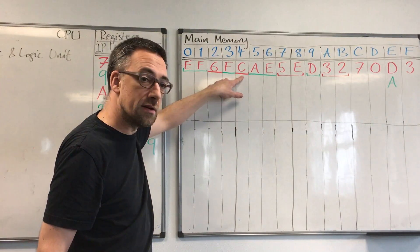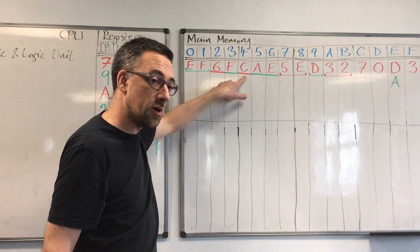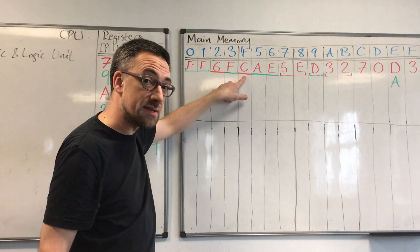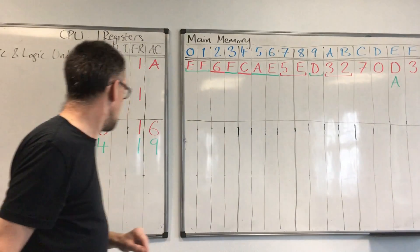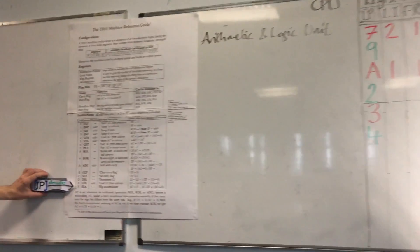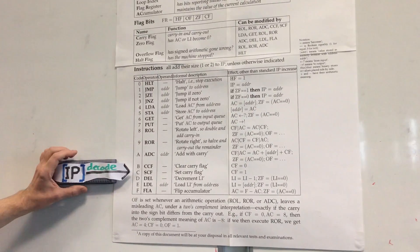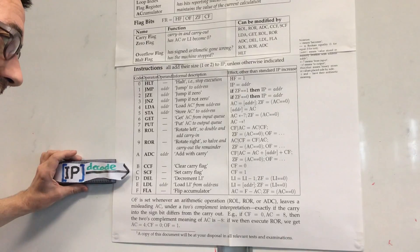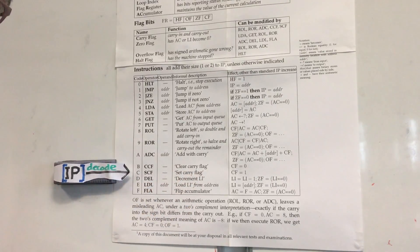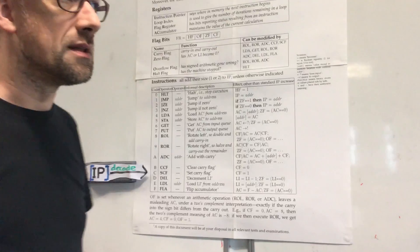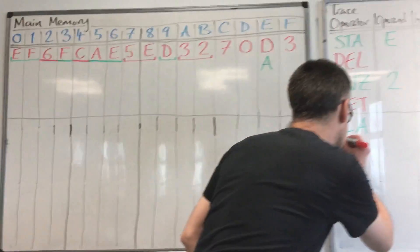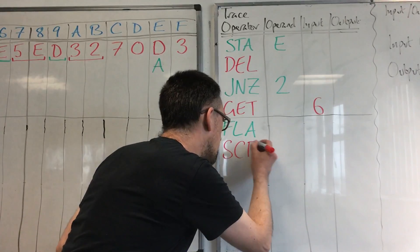And then we look to see what's stored there to find the code of the operator. This time it's C. So if we go to the instruction table and decode C, we see that we have the operator set carry flag, and it doesn't have an operand. Let's write that in the trace. Set carry flag.